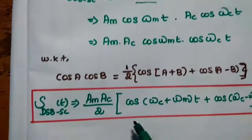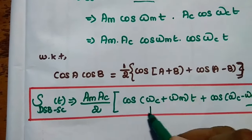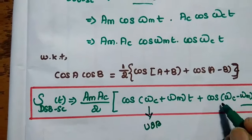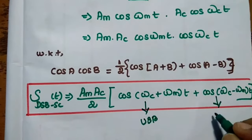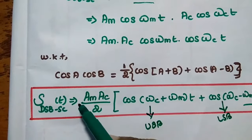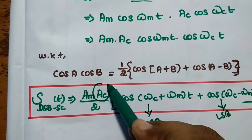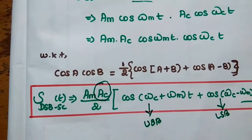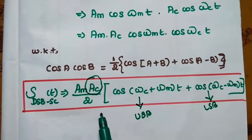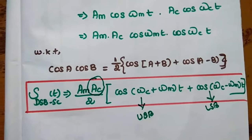Here we are having only the sidebands. The term (ωC + ωM) represents the upper sideband, and (ωC − ωM) represents the lower sideband. There is no carrier signal here — we are using only the carrier amplitude. This is the equation of the double sideband suppressed carrier signal, and it is very important.